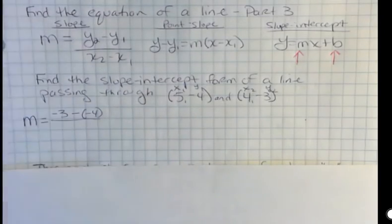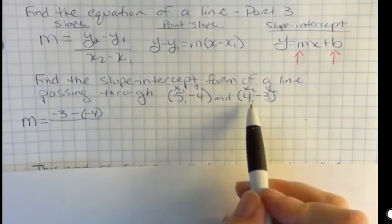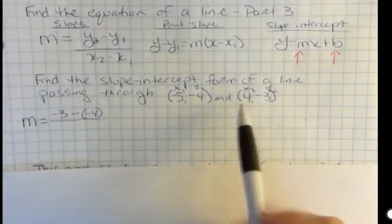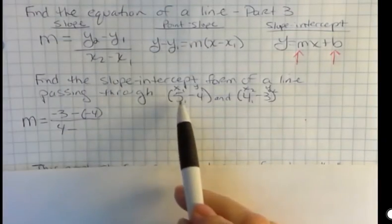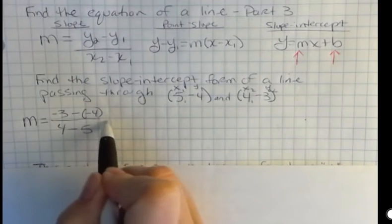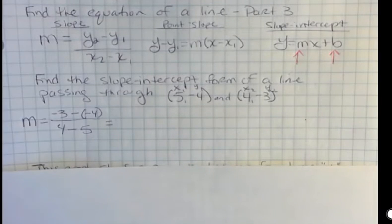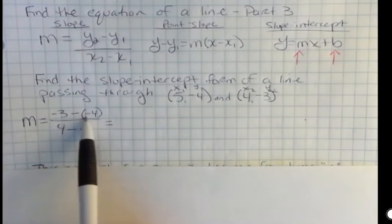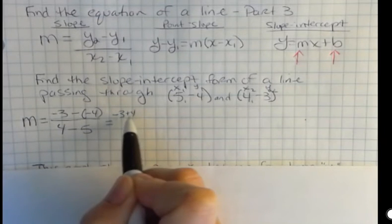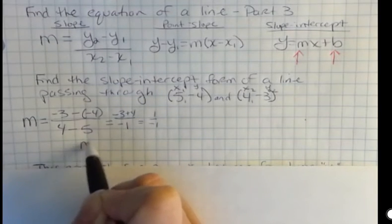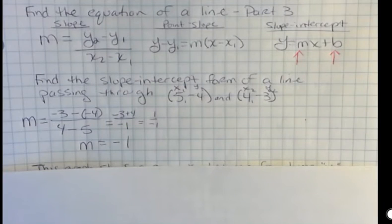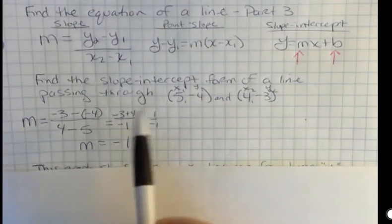On the bottom I'm taking x sub 2, which is 4, and subtracting x sub 1, which is 5. So now I'm going to simplify that. I have negative 3 plus 4 over negative 1, and that gives me 1 over negative 1, and I find out that my slope is negative 1. You always want to reduce that to an integer if you can. If it's a fraction then so be it, but we don't like decimals so much.